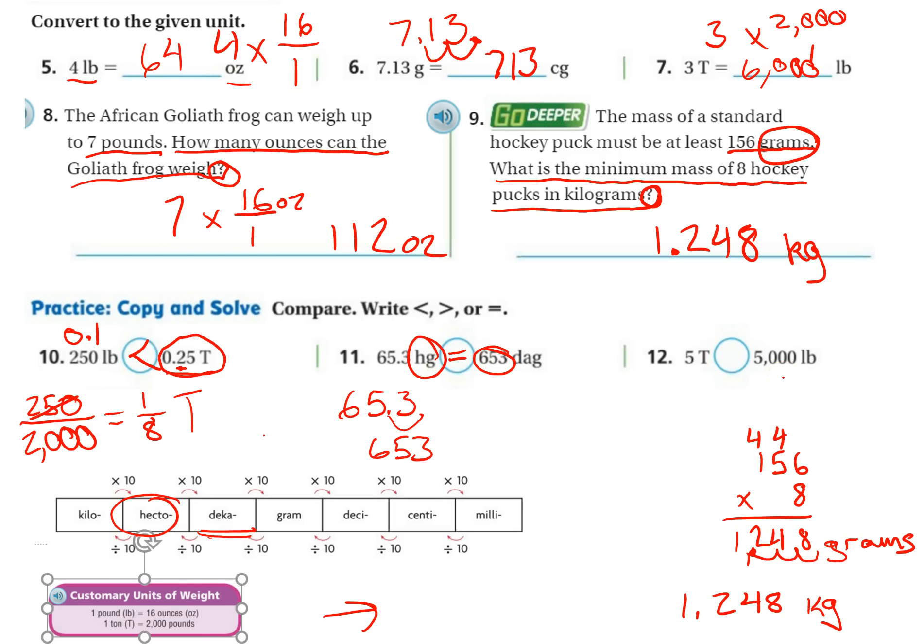All right, five tons to 5,000 pounds. Well, I know one ton is 2,000 pounds. So if I multiply five times 2,000, I'm going to get 10,000 pounds. And 10,000 pounds is definitely bigger than 5,000 pounds.